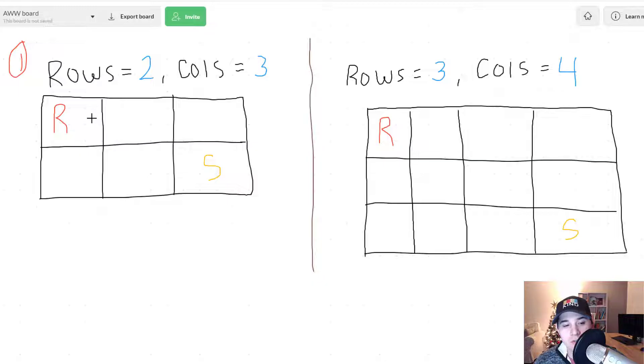So to get to the right box right here, because the robot can only move down or right, this would take one move right. Or if the robot went down this would also be one move.